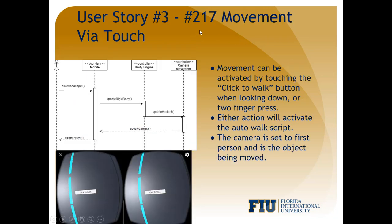The third user story is movement via touch. Since users may be using a Google Cardboard headset with only one button for tapping, we created a button that users could click to toggle walking on and off. Otherwise, the user could also use a two-finger press to toggle walking on and off. The first image shows the sequence diagram for movement, while the second image shows the button that can be clicked to toggle movement.